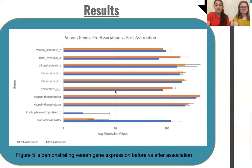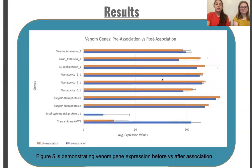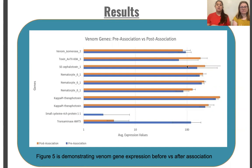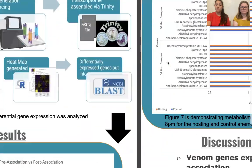Looking back at our venom gene graph, we saw that the hosting anemones in orange were upregulating venom genes. We think this is because they were ultimately trying to protect their clownfish without harming it. By upregulating these venom genes, they warded off other predators but did not harm their symbiont directly. The reason they're doing this is because they're receiving so many benefits from the clownfish — why would they want to harm something providing them so many benefits?